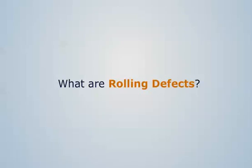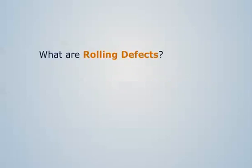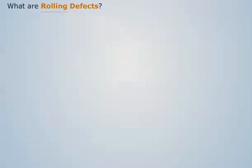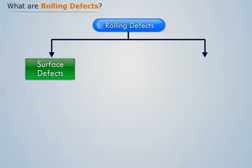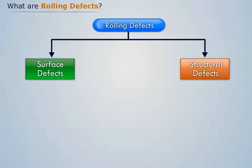What are rolling defects? The rolling defects are mainly classified into two types: surface defects and structural defects.